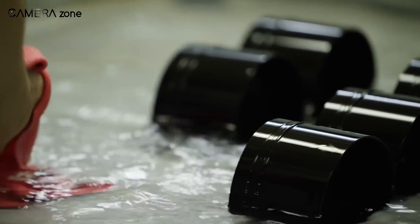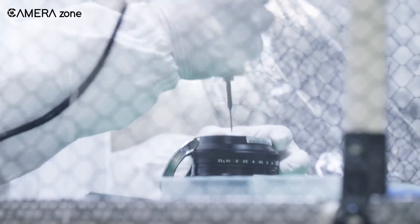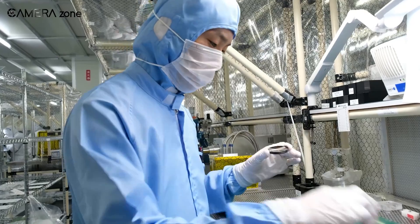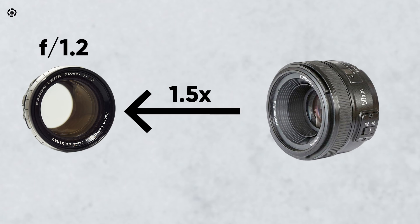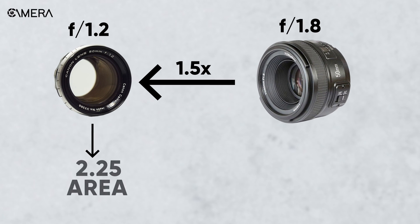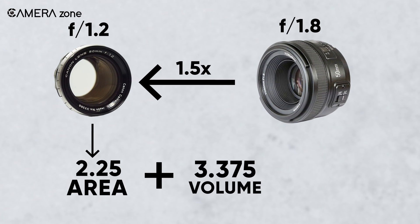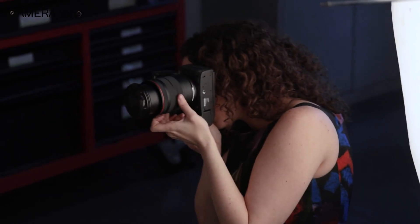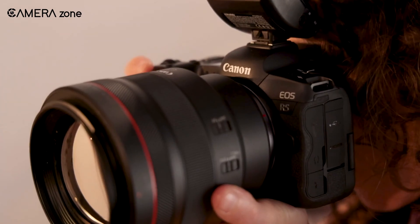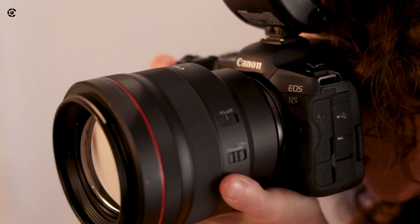Not to mention the R&D that goes into AF motors, body design, weather sealing, coating, etc. A lens with an f/1.2 maximum aperture is 1.5 times larger in diameter than a lens with an f/1.8 maximum aperture. 1.5 times the diameter means 2.25 times the area and 3.375 times the volume of glass — and that means you can expect to pay about 3.5 times as much if the designs are otherwise identical.